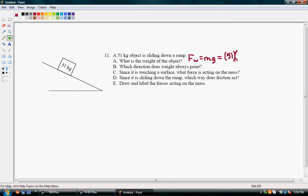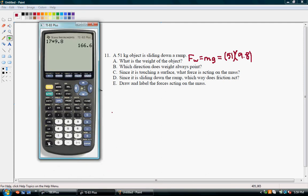And the acceleration due to gravity is 9.8. When we multiply those, we get 51 times 9.8 and we get 499.8.